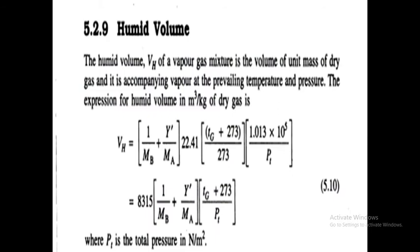Humid volume is one of the terminologies used in humidification operations, denoted as VH. The humid volume of a vapour-gas mixture is the volume of unit mass of dry gas and its accompanying vapour at the prevailing temperature and pressure. The expression for humid volume in m³/kg of dry gas is: VH = (1/MB + Y'/MA) × 22.41 × (Tg + 273)/273 × (1.013 × 10⁵)/PT. Here MA and MB are the molecular weights of components A and B.